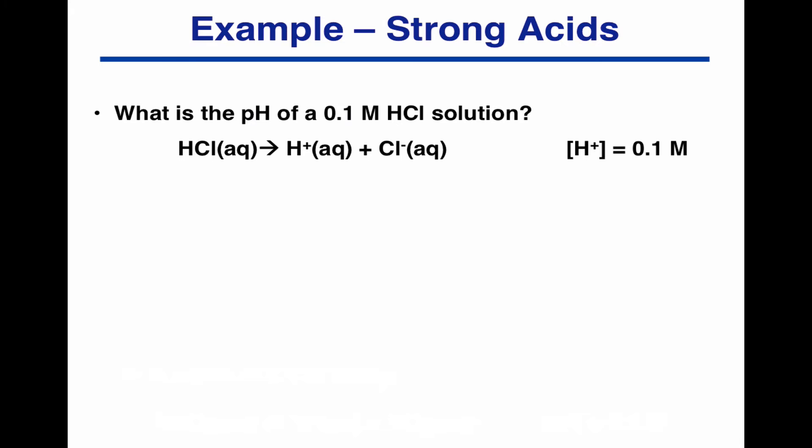So if we're asked to work out the pH of a 0.1 molar HCl solution, we know it's a strong acid. So if the H plus concentration is 0.1 molar, pH is minus log to the base 10 of 0.1, which is 1.